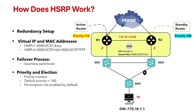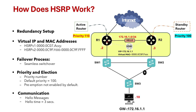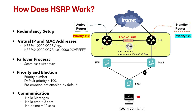Another important thing to understand about how HSRP works is how HSRP communicates. The routers in the HSRP group send hello messages to each other to monitor each other's status. These hello messages are sent every three seconds and help detect if a router has failed. If the standby router doesn't receive a hello message from the active router, it assumes the active router has failed and takes over the active role, which is called the hold time. The hold time is 10 seconds.